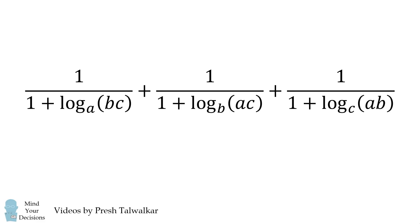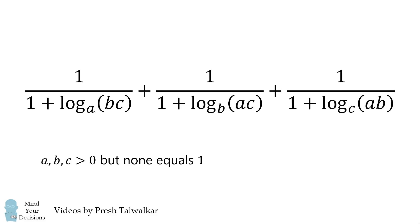Simplify the following sum of three fractions. The first fraction is equal to 1 divided by 1 plus log base A of the product BC. The second fraction is 1 divided by 1 plus log base B of the product AC. And the third fraction is 1 divided by 1 plus log base C of the product AB. A, B, and C are greater than 0, but none of them is equal to 1.